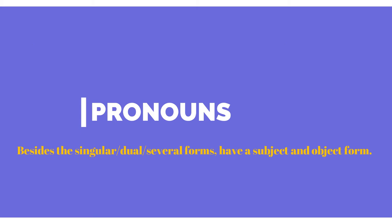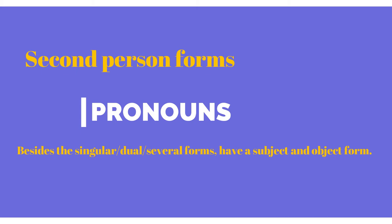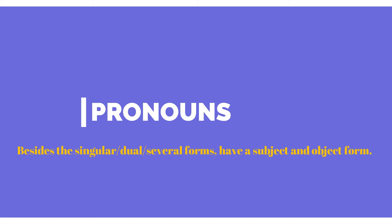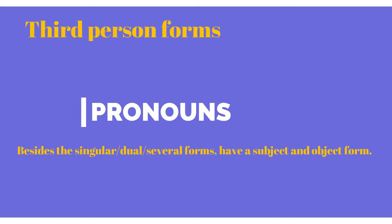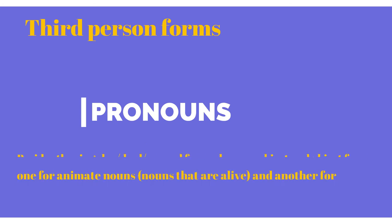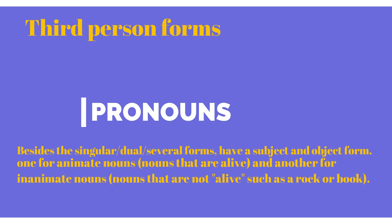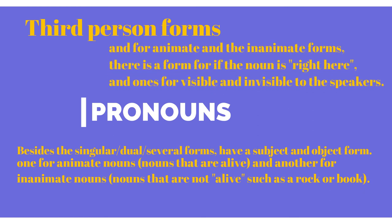The second and third person pronominal forms use the same forms for dual and several inflections. The second person form, like you or you all, outside of the singular-dual-several system, has a subject and object form. The third person form is the most complex, with two sets: one for animate nouns and another for inanimate nouns. On top of this, there is also visibility to consider — there is a form for if the noun is right here, and ones for visible and invisible, from the viewpoint of the speaker and the hearer.